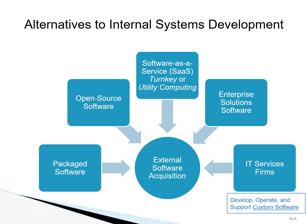Another form of software is software as a service, which is when you use software essentially as a service on the cloud. For example, Office 365 offered by GMU to students and staff is a form of software as a service, as is the class feedback form software used in the class. Another form is enterprise-wide solutions, which usually integrate many business processes and functions in an organization, like enterprise resource planning tools such as SAP or Salesforce.